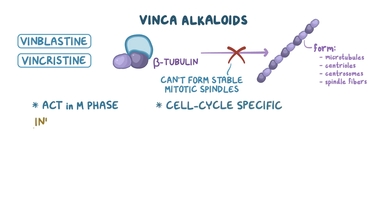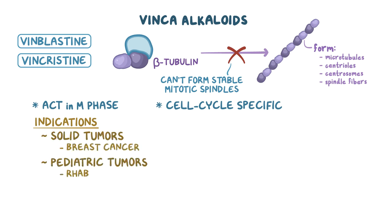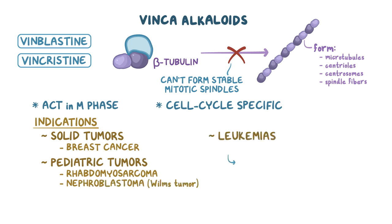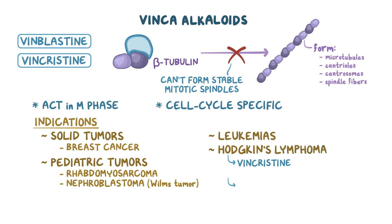For indications, vinca alkaloids are used for solid tumors like breast cancer, pediatric tumors like rhabdomyosarcoma and nephroblastoma or Wilms tumor, and leukemias. Vincristine is also used for Hodgkin's lymphoma, while vinblastine is used for non-Hodgkin's lymphoma.